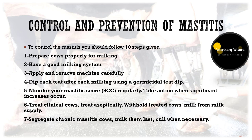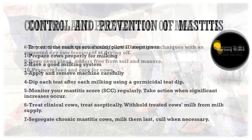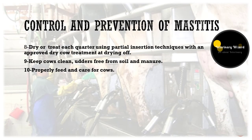Seventh, segregate chronic mastitis cows, milk them last, and cull when necessary, as cows with chronic mastitis serve as reservoirs of organisms and could infect susceptible cows. Eighth, dry-treat each quarter using partial insertion techniques with an approved dry cow treatment. Ninth, keep cows clean with udders free from soil and manure, and avoid swampy areas. Tenth, properly feed and care for the cows.